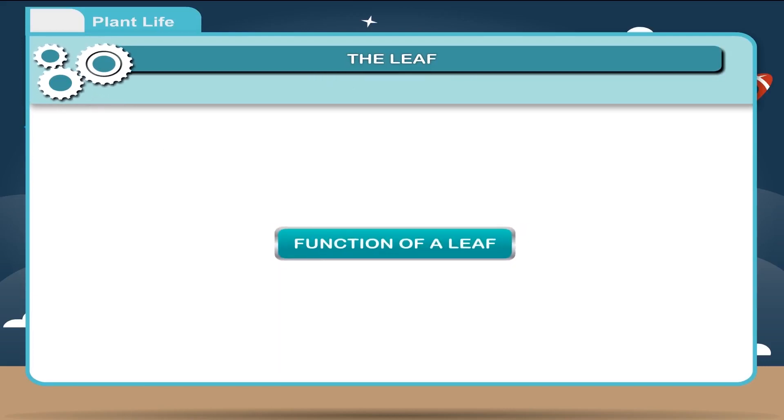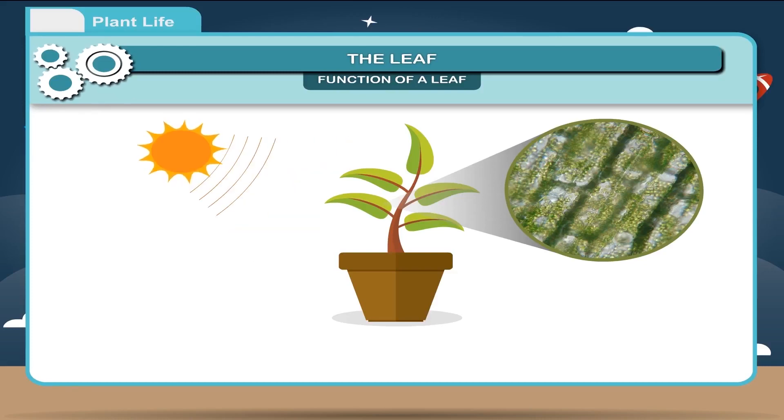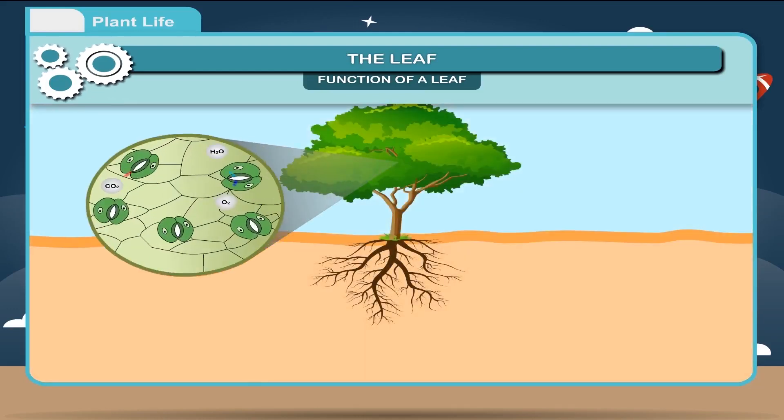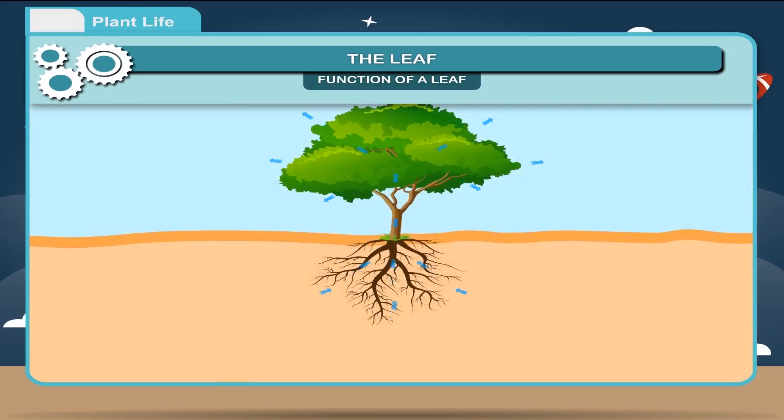Function of a Leaf: The main function of leaf is the synthesis of food with the help of chlorophyll, carbon dioxide, and water in the presence of sunlight by the process of photosynthesis. Second, the leaves perform gaseous exchange through small pores on their surface called stomata. The leaf of Victoria regia can bear the weight of a child. Third, the excess water in the form of water vapor is removed from the leaves through stomata and the process is called transpiration.